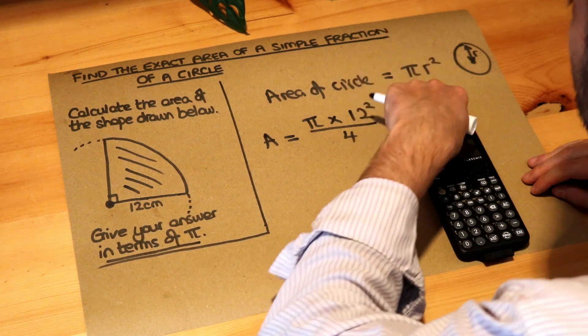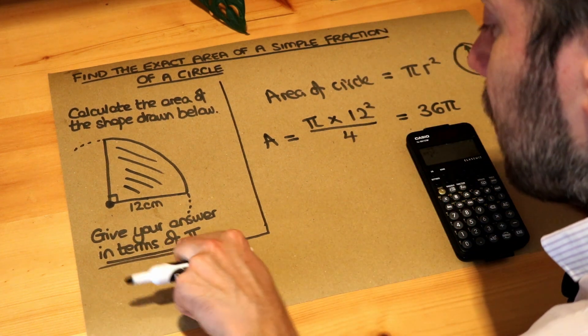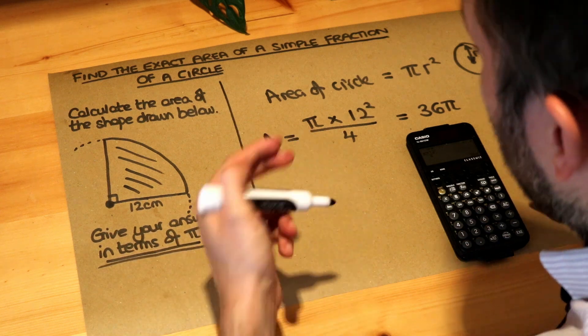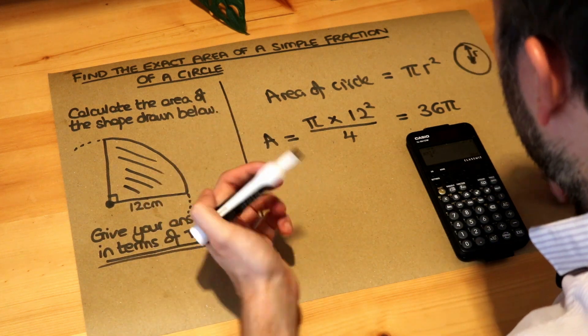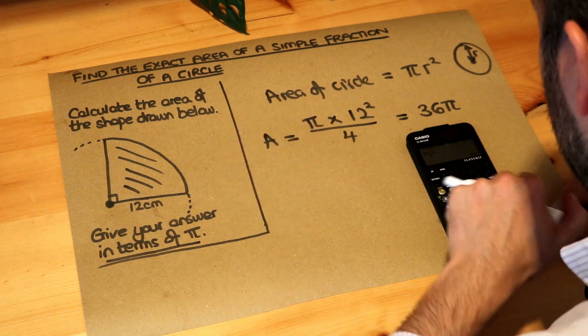That means 36 lots of pi, 36 times pi. And this is an answer that's in terms of pi. We can either give a circle related answer in terms of pi, or we can give it as a decimal.